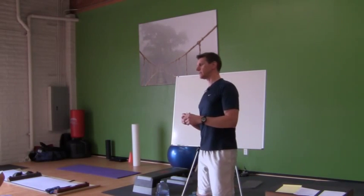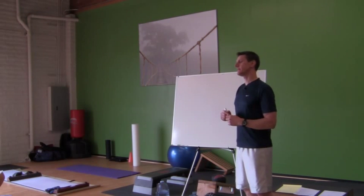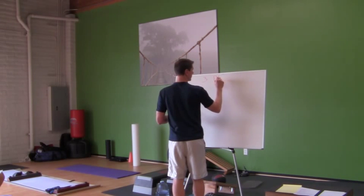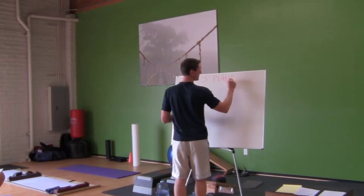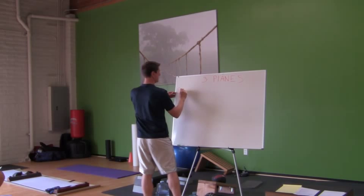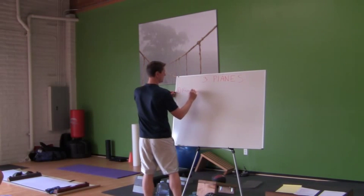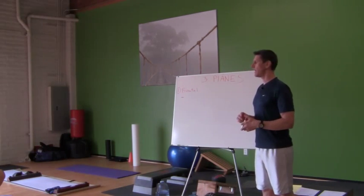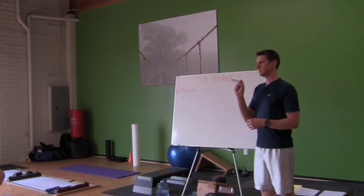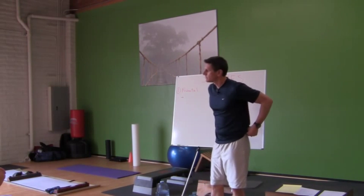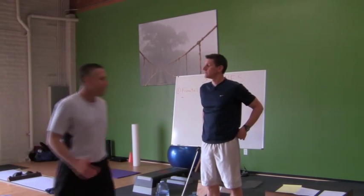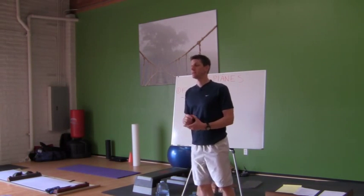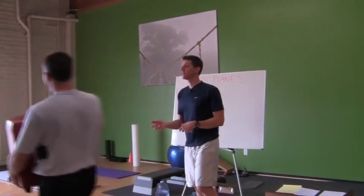So Jason already mentioned two of the planes. What are the three planes? We can do one plane at a time. Starting with the frontal plane — the frontal plane bisects the body. It cuts the body into front and back halves, or anterior and posterior halves.